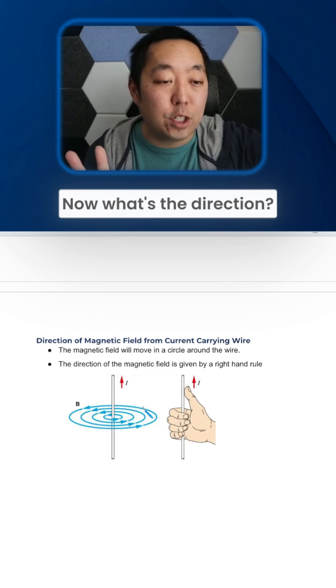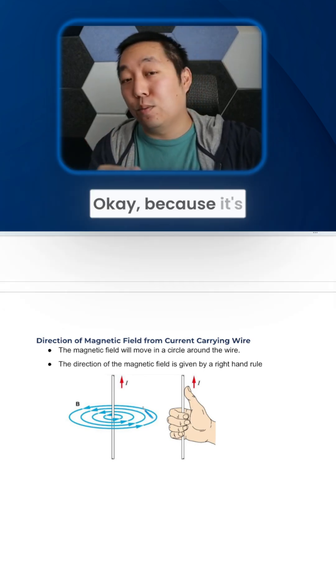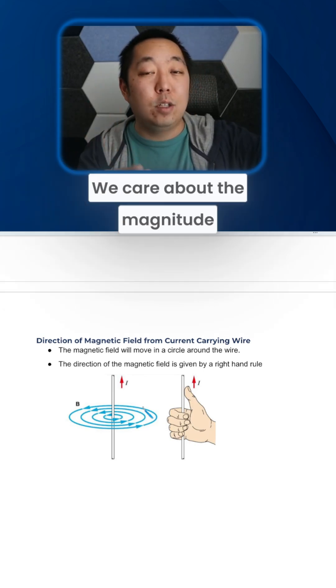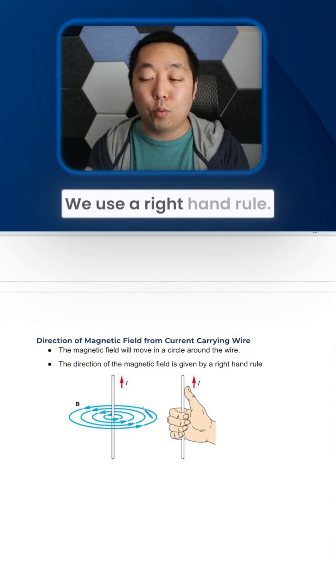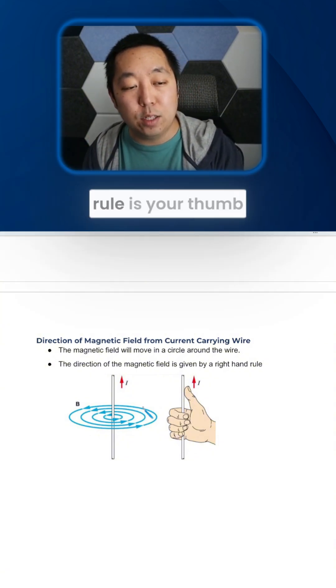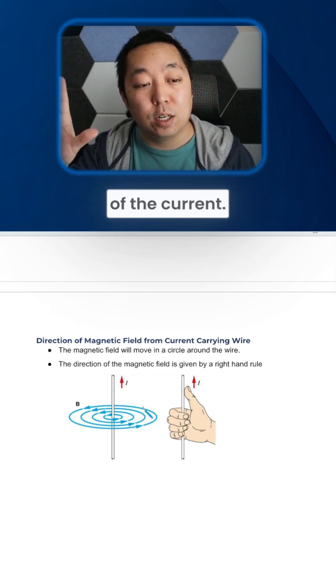Now, what's the direction? Okay, because it's a vector, right? We care about the magnitude and the direction. We use a right-hand rule, okay? And this right-hand rule is your thumb points in the direction of the current.